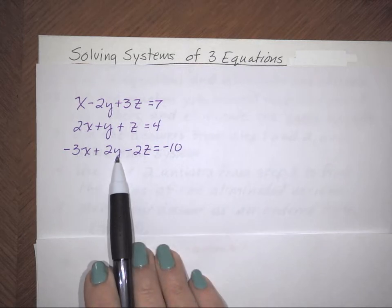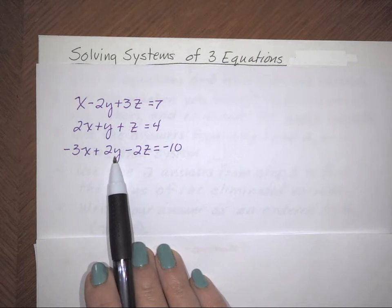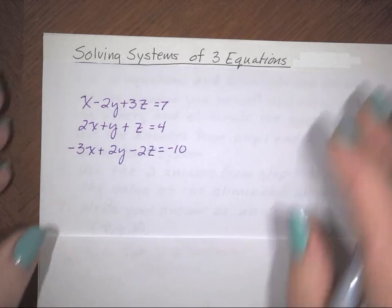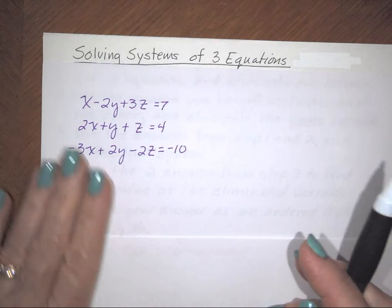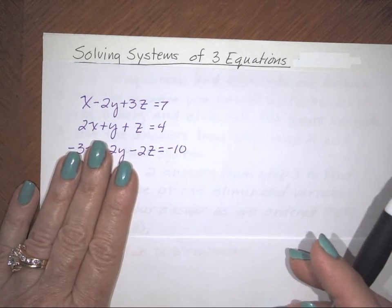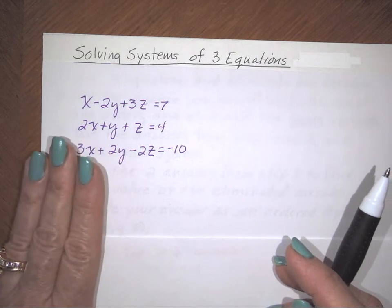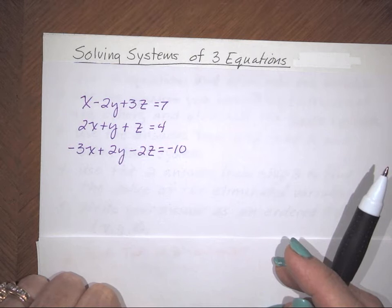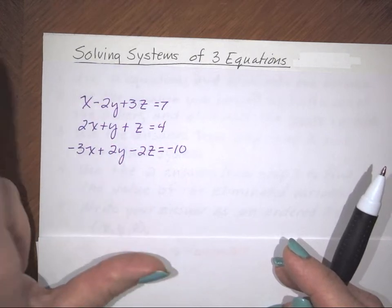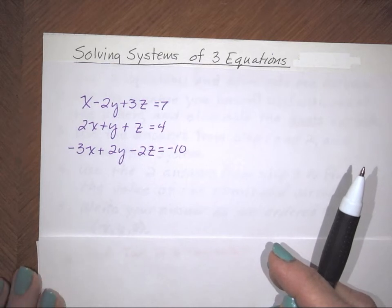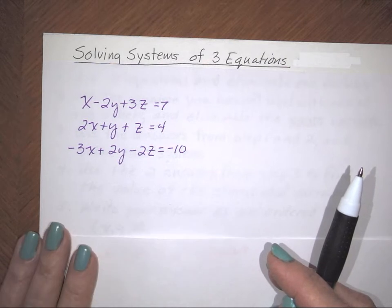You do not need to copy this system down — I'm using it just to talk about the process before we start working the problem. When we solved systems of two equations, we used graphing, substitution, and elimination. I'm hoping you got really good at elimination, especially since you've already done it in Algebra 1. I want to first describe what we're doing before we write the steps, because I don't want anyone to be confused when I start writing the steps. Just like with systems of two, I could choose to eliminate any of the variables — X's, Y's, or Z's. I'm going to pretend we decided to eliminate Z's, just for the point of discussing this.